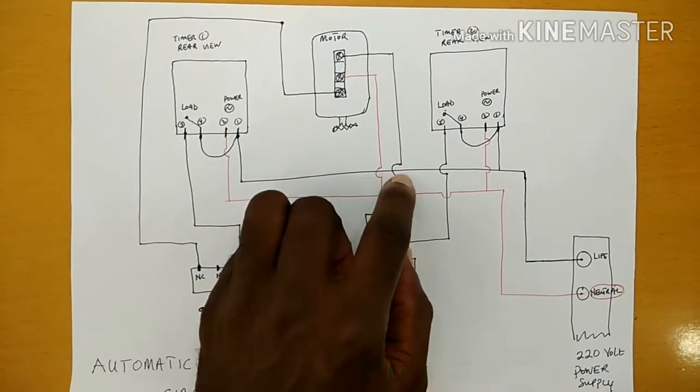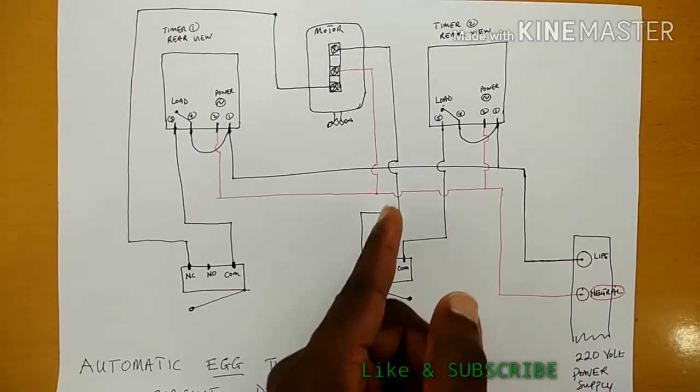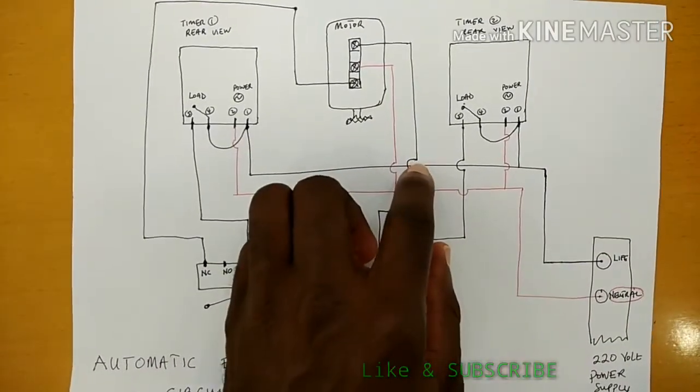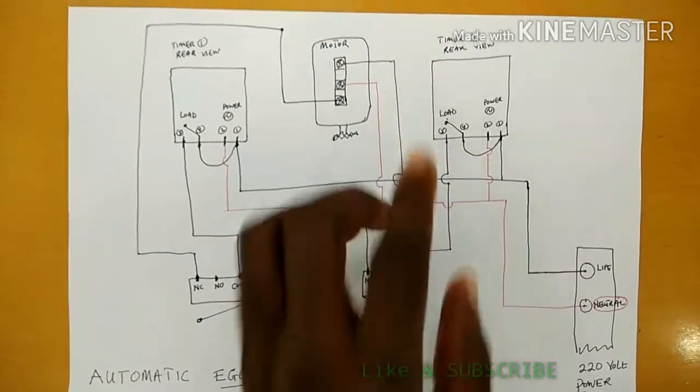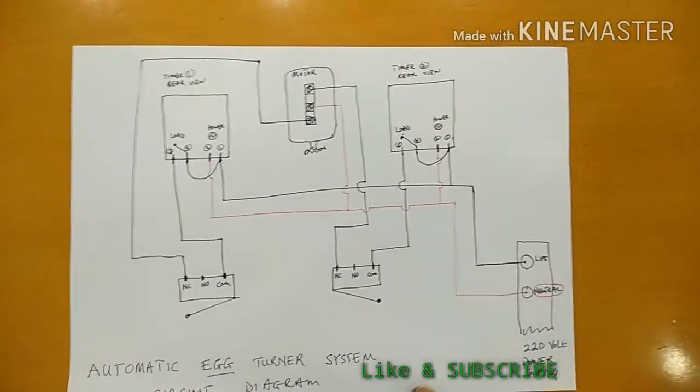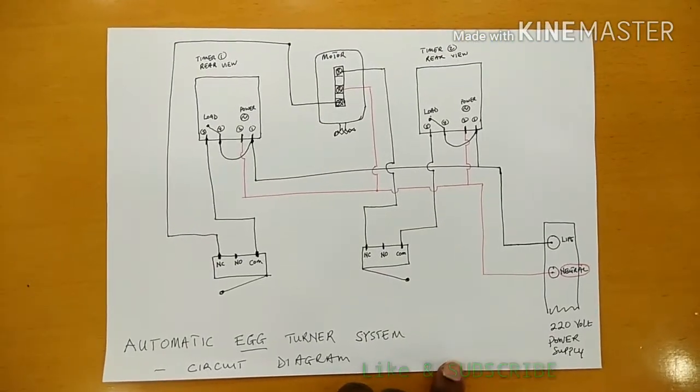This little semicircle is telling us the wire is not supposed to join this particular one, it's supposed to go over it. This is the circuit diagram for that particular connection.